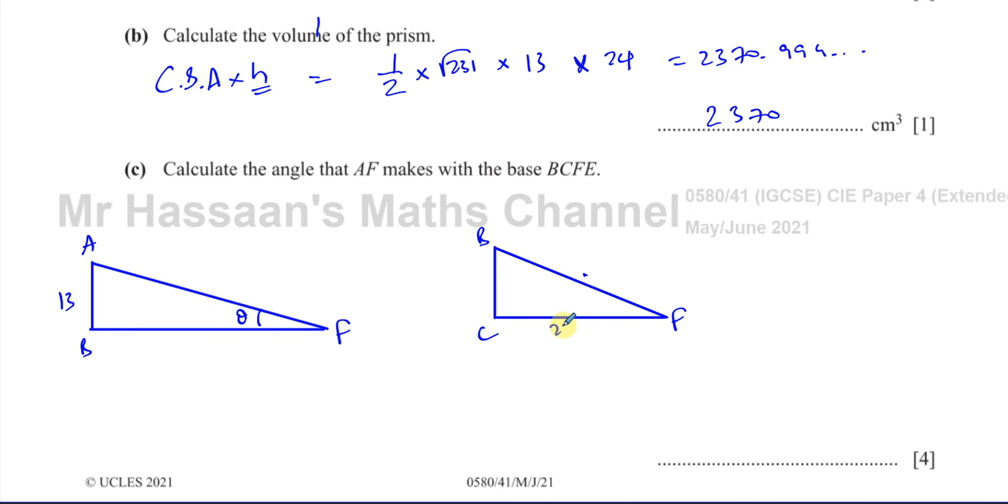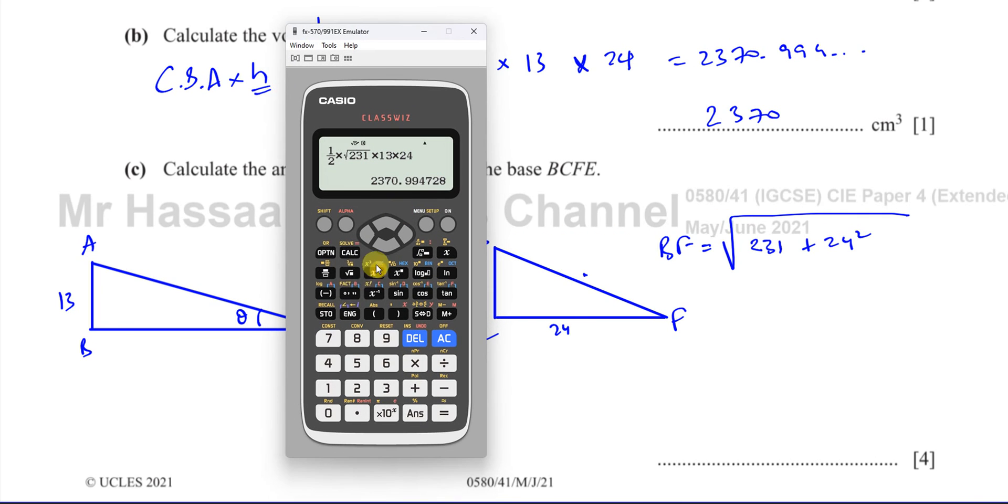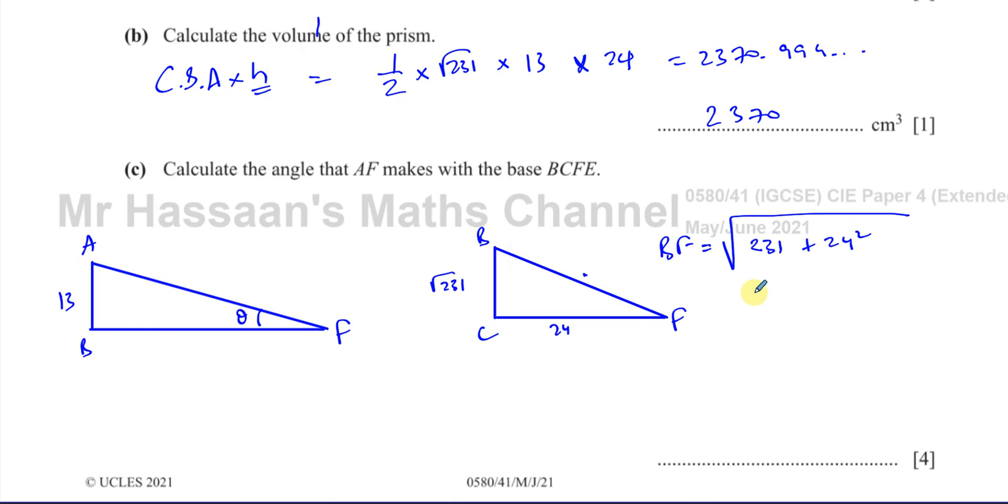So here we have 24, and here we have the square root of 231. So I can say that BF, using Pythagoras, is equal to the square root of root 231, which is, if you square it, it gives you 231, plus 24 squared. So BF is going to be equal to the square root of 231 plus 24 squared. I don't have to square the 231 because it was the square root of 231. When you squared it, you get 231. So that gives us the square root of 807. So BF is equal to the square root of 807. Which means this is the length, root of 807.